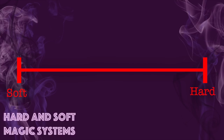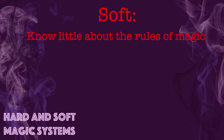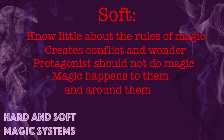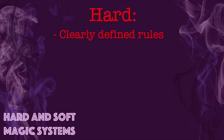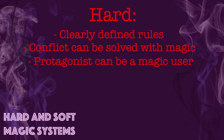Magic systems fall on a scale between hard and soft. With soft magic we know very little about the rules and laws of magic and it's generally used to create conflict and a sense of wonder in the story. The protagonist typically cannot do magic and magic happens to and around them. Hard magic on the other hand has clearly defined rules that cannot be bent or broken, and this allows the author to solve conflict with magic. Because we know what magic can and cannot do, it doesn't feel like a gimmick — instead characters use it like a tool. This also means your protagonist can be a magic user, since they can learn or already understand the rules.